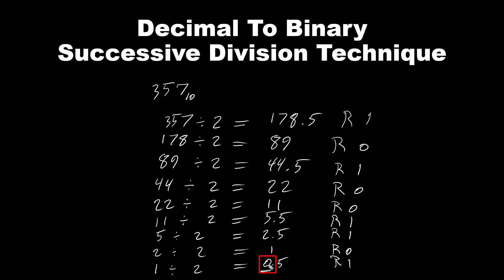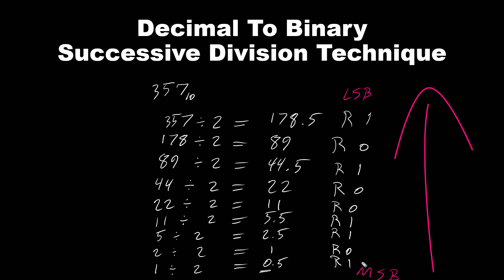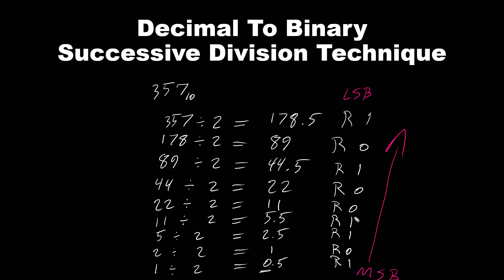So this number at the top is the least significant bit, and this number at the bottom is the most significant bit. What we need to do next is write the numbers going from bottom to top. Which in this case gives us 101100101.